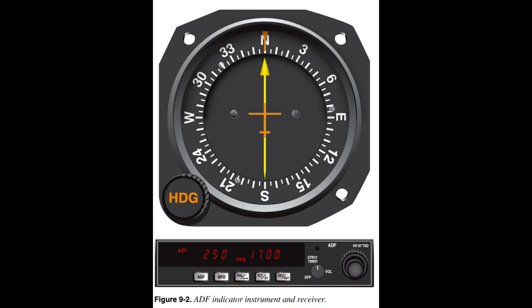Traditional Navigation Systems — Non-Directional Radio Beacon (NDB). The non-directional radio beacon (NDB) is a ground-based radio transmitter that transmits radio energy in all directions. The ADF, when used with an NDB, determines the bearing from the aircraft to the transmitting station. The indicator may be mounted in a separate instrument in the aircraft panel. The ADF needle points to the NDB ground station to determine the relative bearing (RB) to the transmitting station.